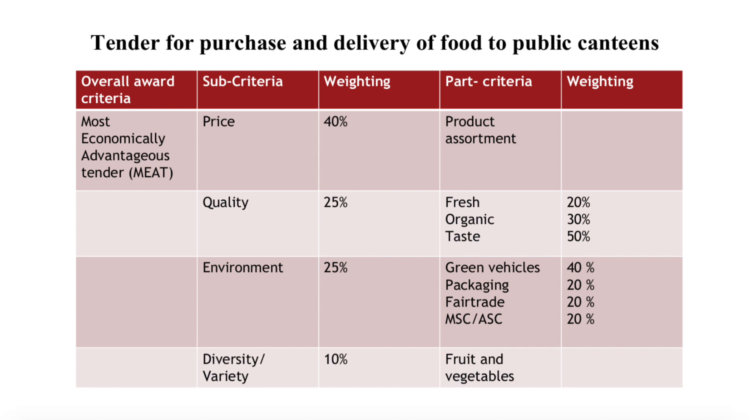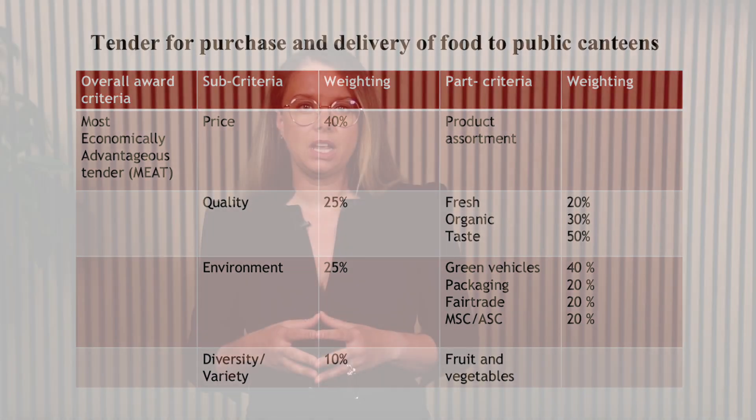Other elements for the achievement of maximum scoring include packaging — it should be reduced, recycled, or reusable — and fair trade labelled food such as MSC or SCT labelled fish or equivalent. It follows from the Dutch coffee case that fair trade might be considered as part of the award criteria. The court also confirmed that award criteria might concern the specific process of production, provision, or trading of goods, services, or works being purchased, or a specific process for another stage of a life cycle, even where such factors do not form part of the material substance.